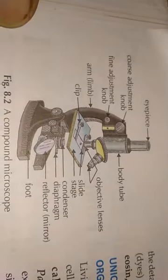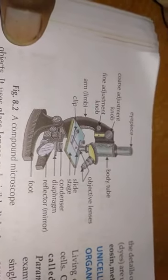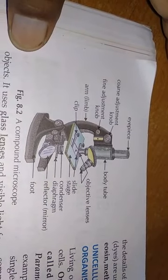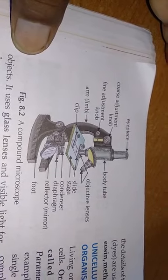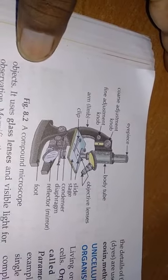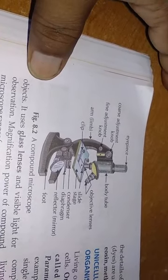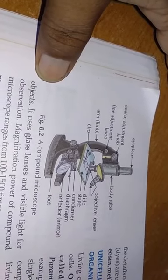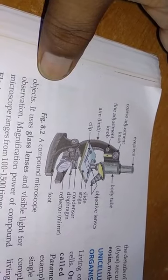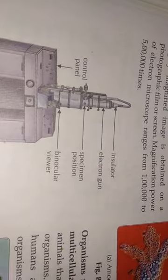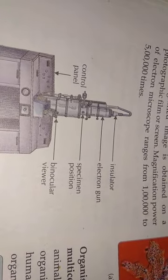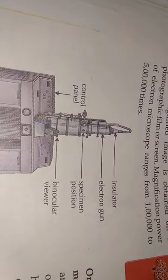Here we can see a diagram of the compound microscope and its parts: fine adjustment, lens, body tube, objective lens, eyepiece, the object slide we observe, condenser, and foot. The electron microscope parts include: control panel, insulator, electron gun, electron beam, and a binocular viewer.